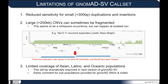Transitioning to practical use cases and limitations: first, we know we have reduced sensitivity for small duplications and insertions — by small I mean less than a few hundred bases. We're actively working to improve this, and the next version of gnomAD will have much-improved sensitivity for small duplications. But in the current release, if you don't see a small duplication or insertion call in gnomAD SV, that doesn't mean it hasn't been observed — we may simply have reduced sensitivity to catalog that variant.